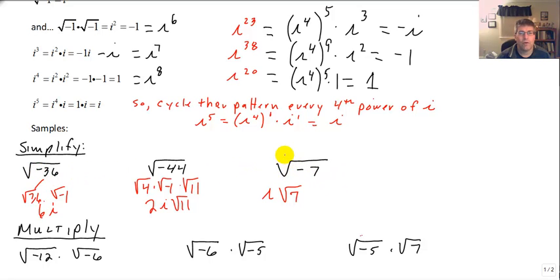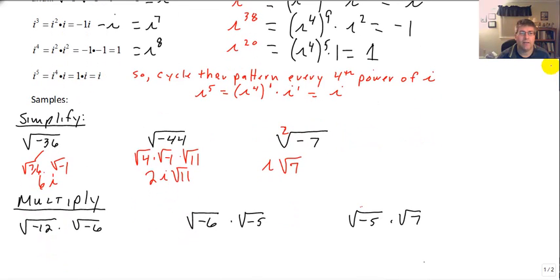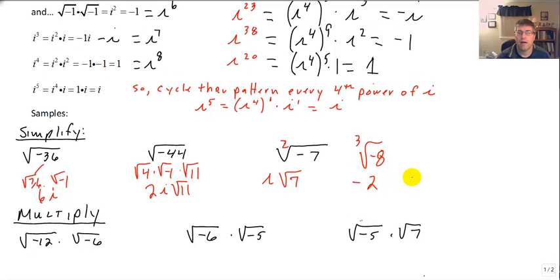Notice that these are all square roots. This does not work for any even root other than square roots, and definitely not cube roots. Sometimes we get confused seeing the cube root of a negative number and think i is involved. Be careful — the cube root of negative 8 is simply negative 2. That does not involve i. People will incorrectly simplify that as 2i, but that is not correct. i has nothing to do with cube roots, only square roots.